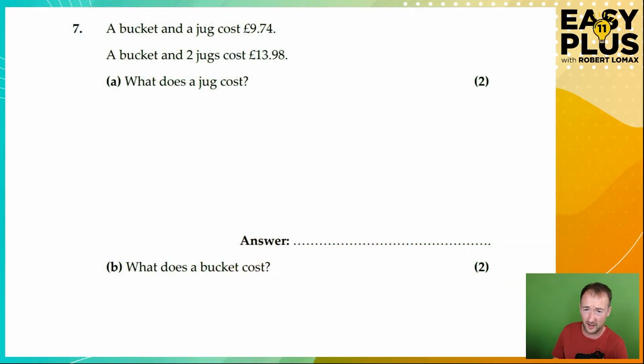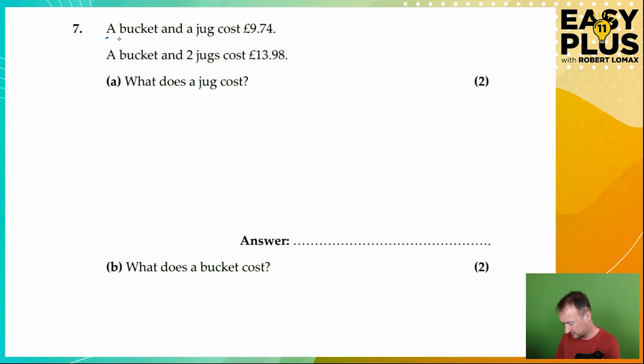So this looks like a classic algebra question, something that you'd solve using simultaneous equations. And if you haven't studied that, it probably looks rather terrifying. But let's think about what's going on. We can see that a bucket and a jug cost £9.74, and we can see that a bucket and two jugs cost £13.98.